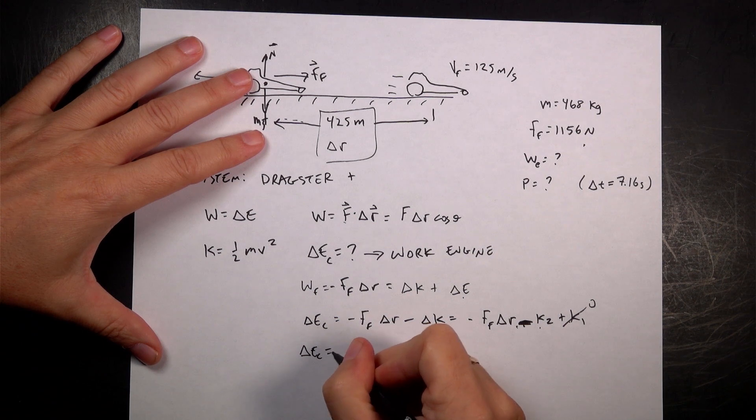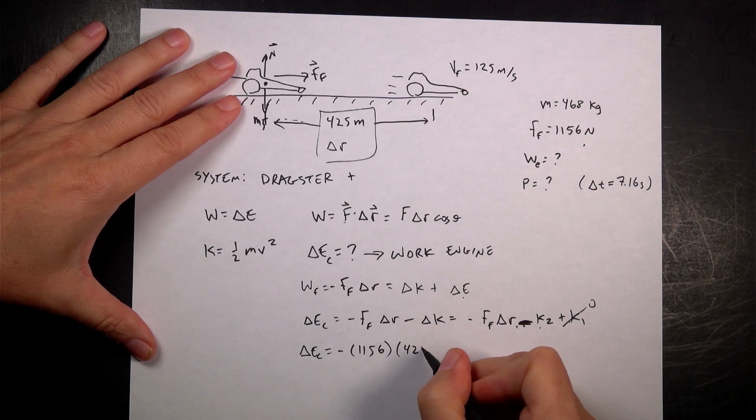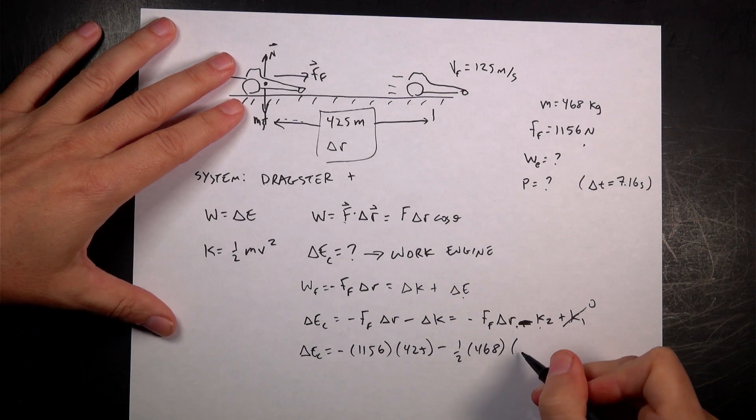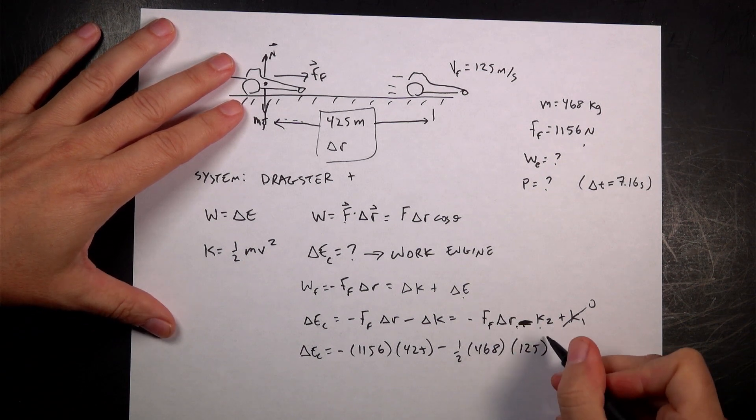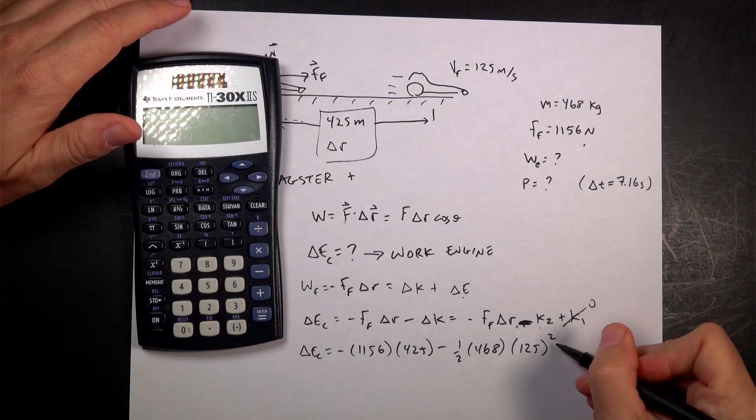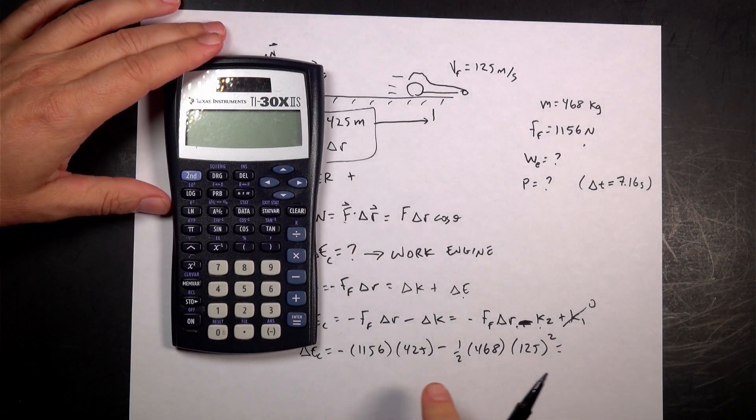Let's just put in our numbers. Delta EC equals negative 1,156 times 425 minus one-half the mass, 468, times the final velocity squared, 125 squared. Where's my calculator? Here it is. Okay, let's put in our values. This is going to give me a negative number and I'm going to take the positive of that.